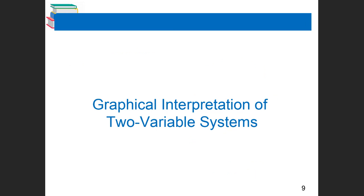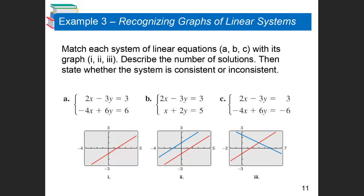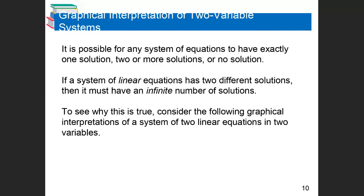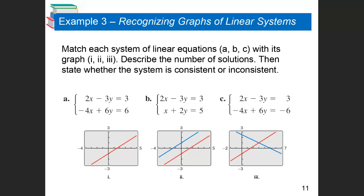Now for the graphical interpretation of two-variable systems. It's possible that if you graph these two equations, they are the exact same line — meaning every answer that works for one works for the other, so there are infinitely many solutions. If the lines are parallel, there are no solutions. And if the lines intersect at one point, there is exactly one solution. A system can have infinite solutions, no solutions, or one solution — that's it.